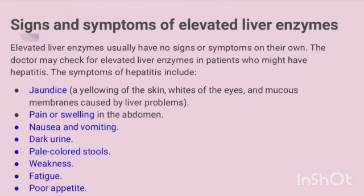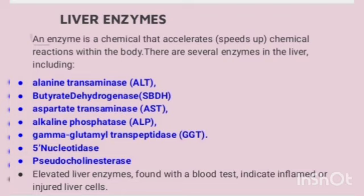Elevated liver enzymes usually have no signs or symptoms on their own. The doctor may check for elevated liver enzymes in patients who might have hepatitis. Symptoms of hepatitis include jaundice — yellowing of the skin, whites of the eyes and mucous membranes caused by liver problems — pain or swelling in the abdomen, nausea and vomiting, dark urine, pale-colored stools, weakness, fatigue, and poor appetite.